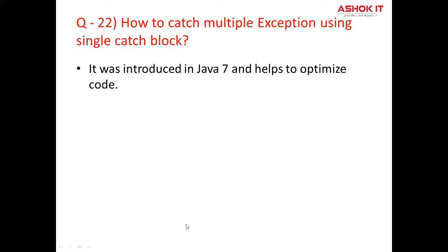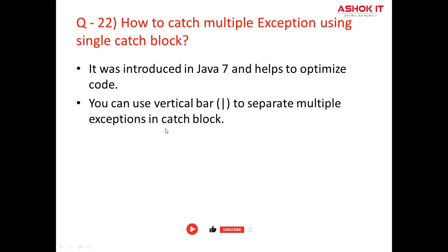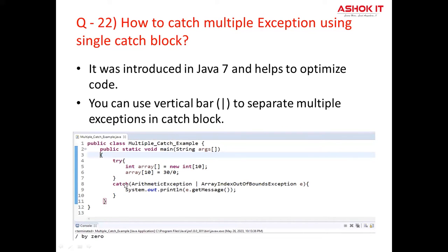Question number twenty-two: How to catch multiple exceptions using a single catch block? Catching multiple exceptions in a catch block was introduced in Java 7 and it helps optimize the code. In Java 7 and later, we can catch more than one type of exception in a single catch block. Each exception type is separated by a vertical bar (pipe symbol). Catching multiple exceptions in a single catch block reduces code duplication and increases efficiency. In this program, this catch block handles ArithmeticException as well as ArrayIndexOutOfBoundsException. The sequence should be: specific exceptions first, then generic exception.